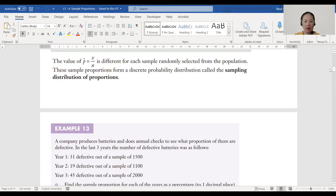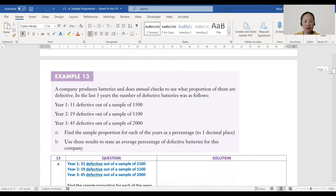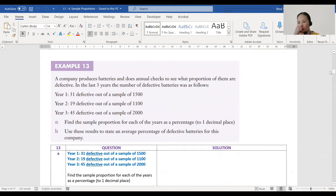Example 13. Antonina, can you read it for us? A company produces batteries and does annual checks to see what proportion of them are defective. In the last three years, the number of defective batteries was as follows: Year 1, 31 defective out of a sample of 1,500; Year 2, 19 defective out of a sample of 1,100; and Year 3, 45 defective out of a sample of 2,000.